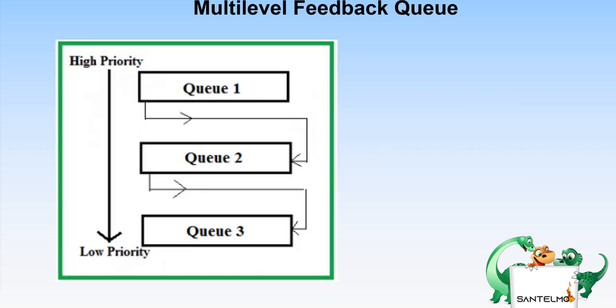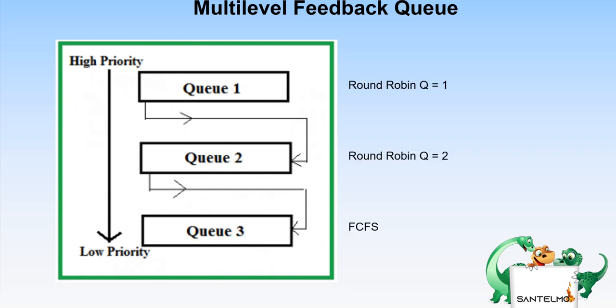Referring to this diagram, we have three different queues: Q1, Q2, and Q3. These queues operate based on priority — processes on Q1 are highest priority, Q2 is next, and Q3 is the lowest priority. Q1 uses round robin with a quantum of one, Q2 uses round robin with a quantum of two.